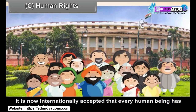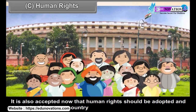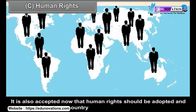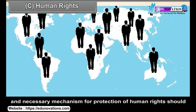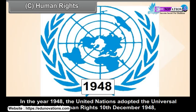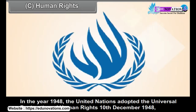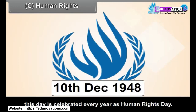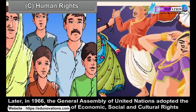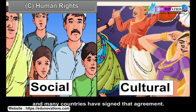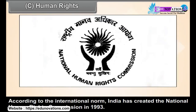Human Rights. It is now internationally accepted that every human being has certain rights. These are described as human rights. It is also accepted now that human rights should be adopted and guaranteed by every country, and a necessary mechanism for protection of human rights should be created. In the year 1948, the United Nations adopted the Universal Declaration of Human Rights on 10th December 1948. This day is celebrated every year as Human Rights Day. Later, in 1966, the General Assembly of the United Nations adopted the International Covenant of Economic, Social and Cultural Rights, and many countries have signed that agreement. According to the international norm, India has created the National Human Rights Commission in 1993.